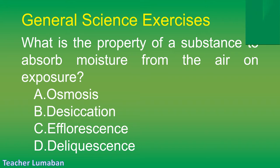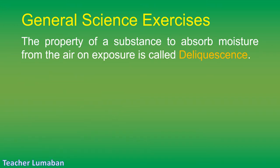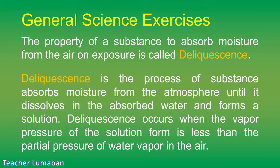The correct answer is Letter D: deliquescence. The property of a substance to absorb moisture from the air on exposure is called deliquescence. Deliquescence is the process by which a substance absorbs moisture from the atmosphere until it dissolves in the absorbed water and forms a solution. Deliquescence occurs when the vapor pressure of the solution formed is less than the partial pressure of water vapor in the air.